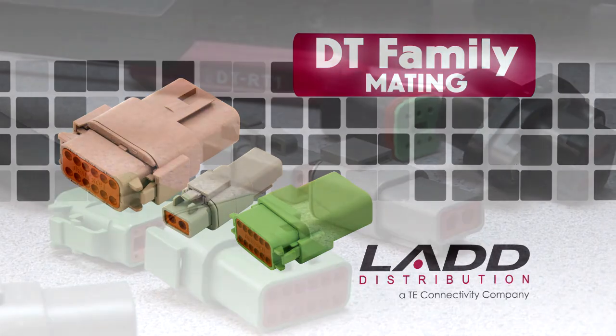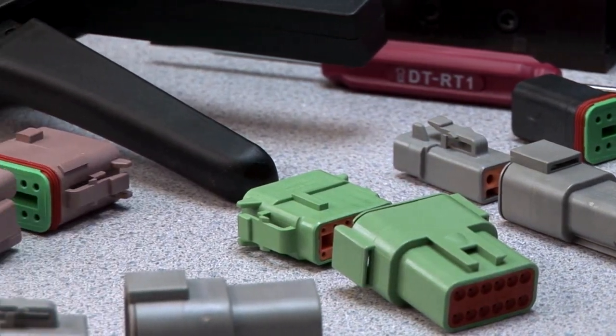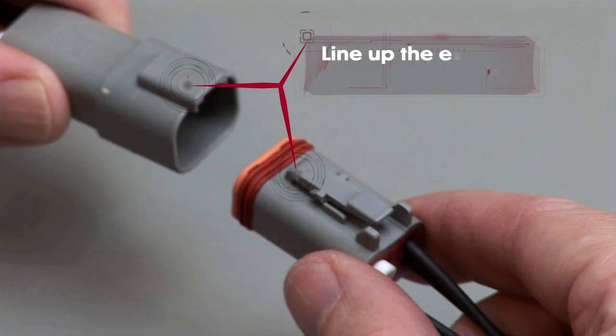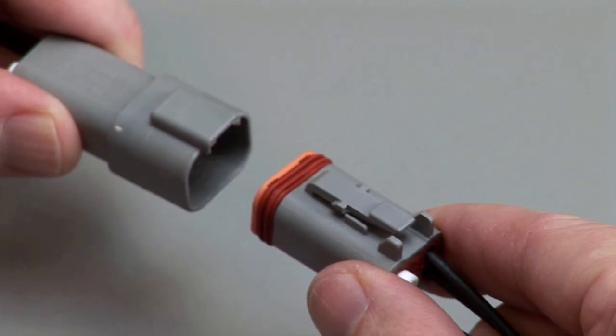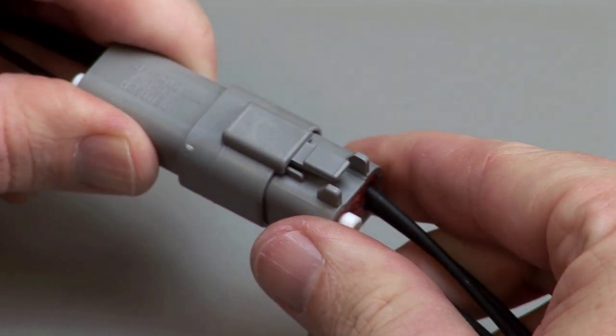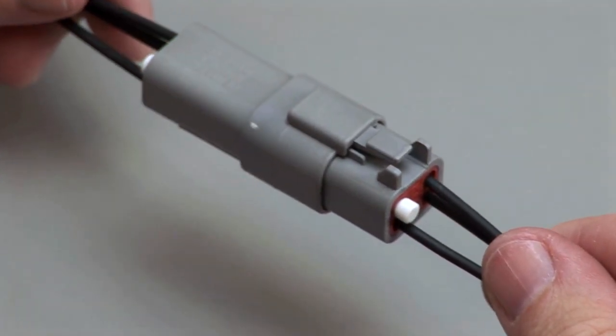All DT connectors are designed to be mated and unmated by hand. When mating a DT series, grasp the connector by the connector body and line up the exterior locking latch. Push the plug and receptacle together until you hear a click and the exterior locking latch is seated in place.